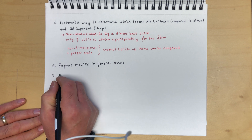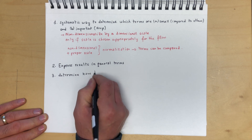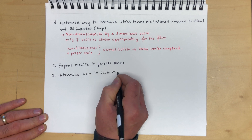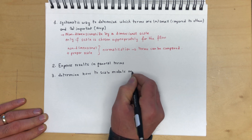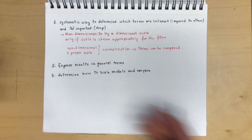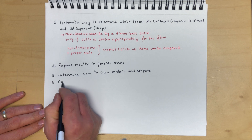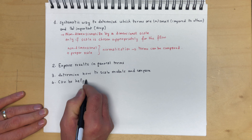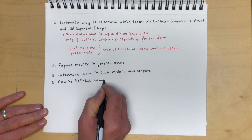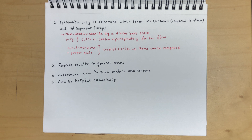Three, it helps you determine how to scale experimental results, how to scale models and compare experiments. And four, it can be helpful numerically, because all the terms have now been properly scaled, so we expect their orders to be manageable, which helps in the possibility of reducing round-off errors, etc.